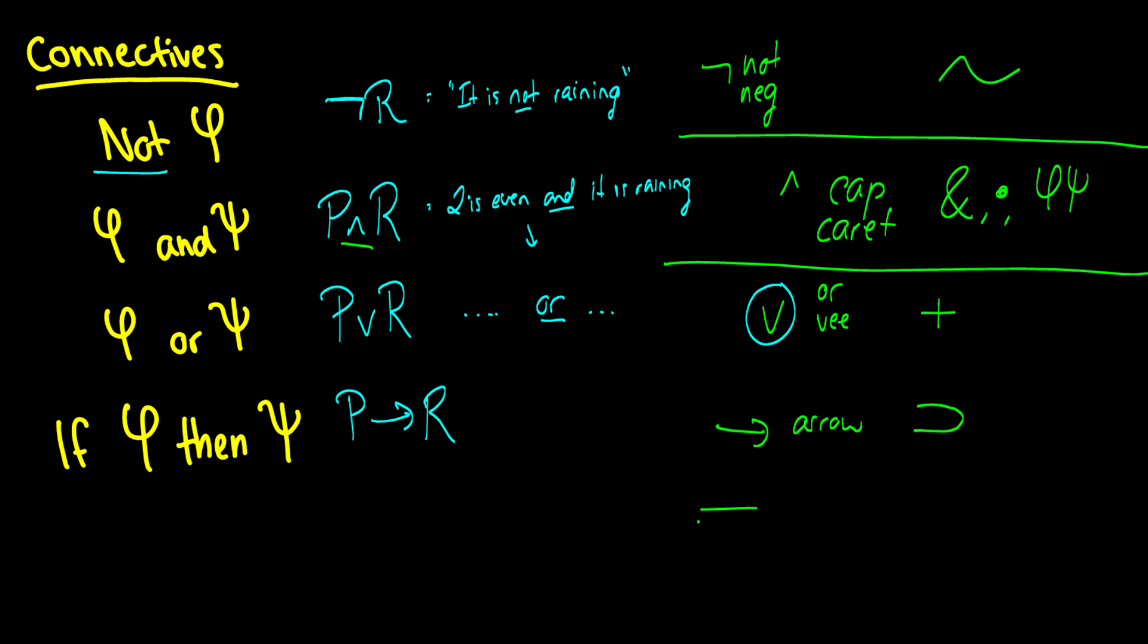I should mention, sometimes there is a difference between these two arrows. And that is purely a logical thing. I'm sure in your introductory course it won't make that much of a difference, but be aware if they use different arrows in your text. And this just means if two is even, then it is raining. So these are all of our connectives here. And you will be using these all the time.